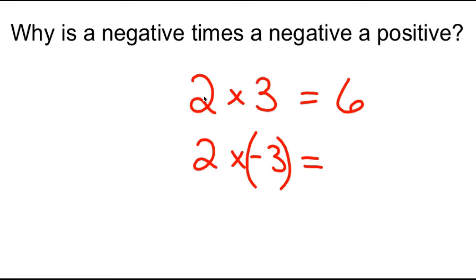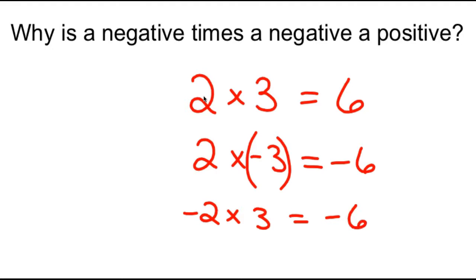2 times negative 3 would be negative 6. And maybe you just had these memorized. What about negative 2 times 3? Well, that's also negative 6.